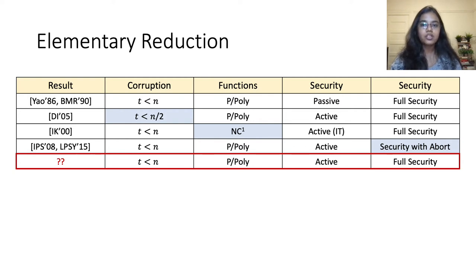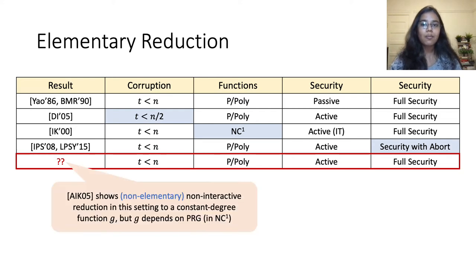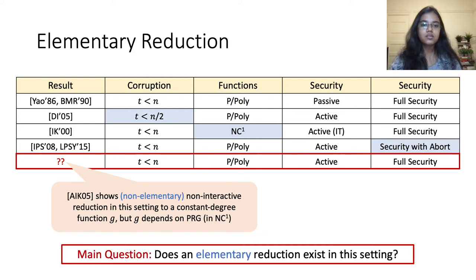In the malicious setting, we either know of elementary reductions with full security in the honest majority setting, or only for NC1 functionalities in the dishonest majority setting. Existing elementary reductions for all efficiently computable functions in the dishonest majority setting are only known to achieve security with abort. We do not know of any elementary reduction in this setting that achieves full security. Applebaum et al. showed a non-elementary non-interactive reduction in this setting to a constant degree function G where G depends on the PRG.